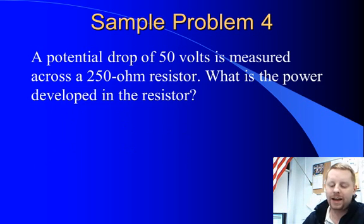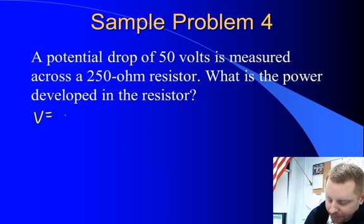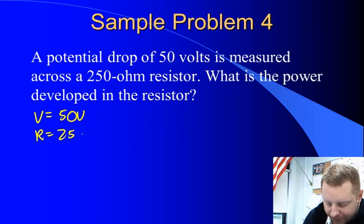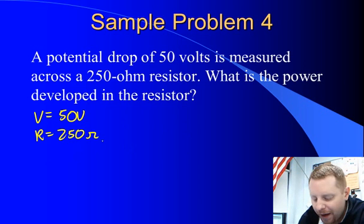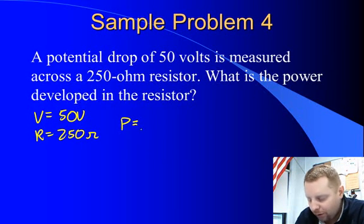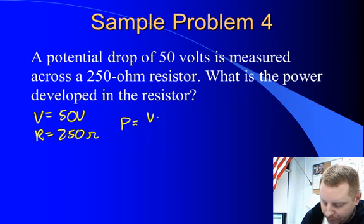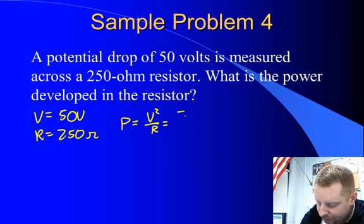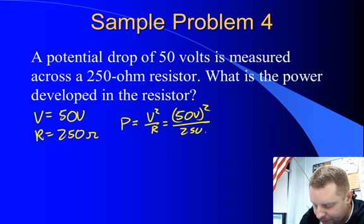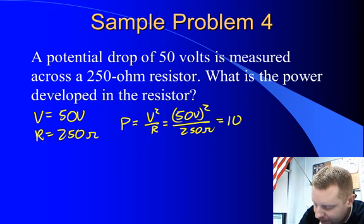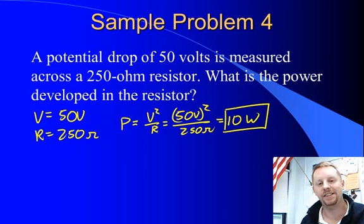All right, moving on. We have a potential drop of 50 volts measured across a 250 ohm resistor. What is the power developed in the resistor? Well, power again, we have a number of different equations you can use for it. One of them is potential difference squared divided by resistance or 50 volts squared divided by 250 ohms should give us a power of about 10 watts. Another manipulation of our basic equations.